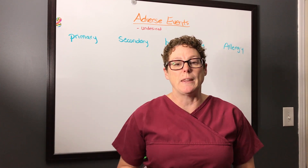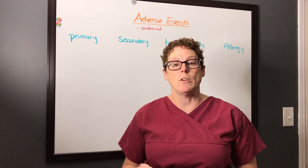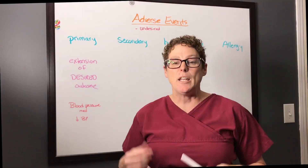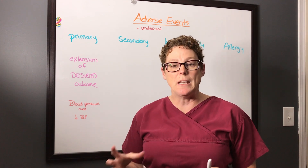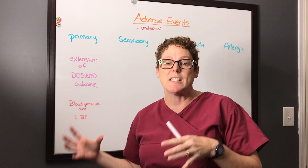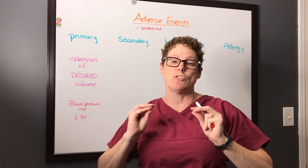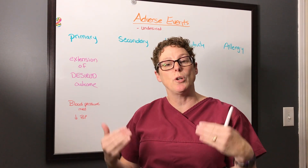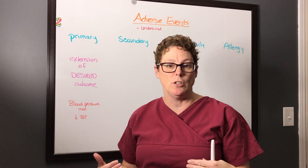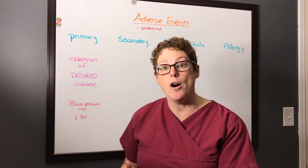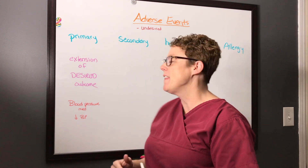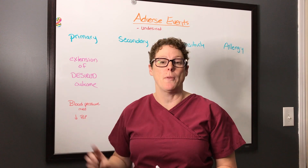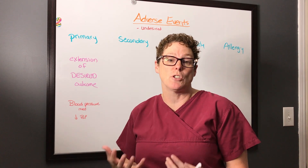We're first going to take a look at the primary adverse event category. In a primary action, what's happening is we actually have an extension of the desired effect. For example, if you take a blood pressure medication to lower your blood pressure and it works so well that it lowers it too far, that would be considered an extension of the desired outcome and that can cause a patient some concern.